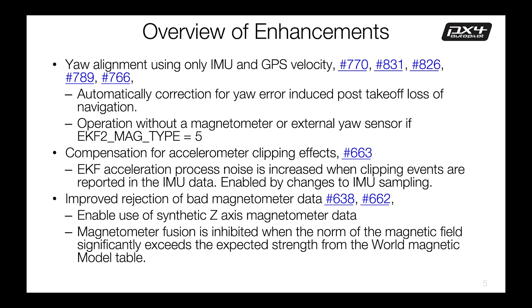Other changes improve robustness. One significant change is the ability to compensate for accelerometer clipping by increasing the process noise, enabled by changes to the IMU drivers that give direct access to high-frequency sample data within the IMUs. We've also improved detection and rejection of bad magnetometer data — I recommend looking at those pull requests if you're interested in the synthetic z-axis method, which enables platforms with corrupted z-axis magnetometer data to replace it with synthesized data. We also have the ability to reject magnetometer data if the field length exceeds limits expected from the world magnetic model table.